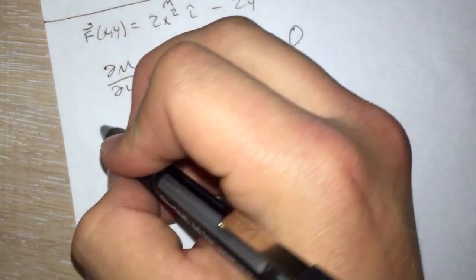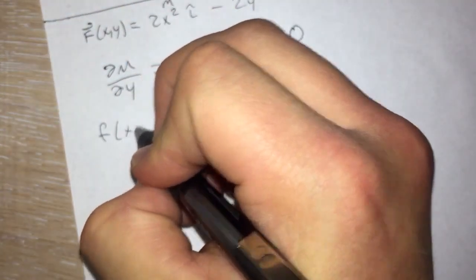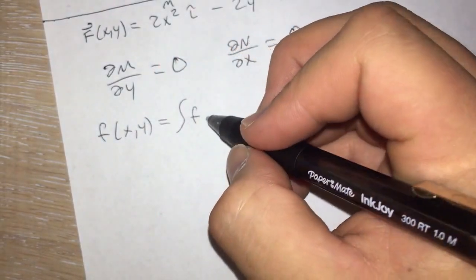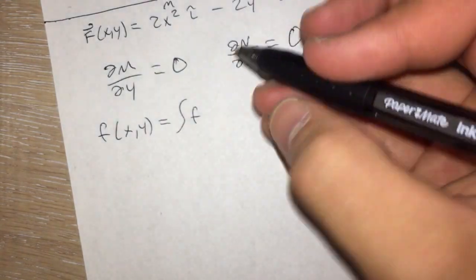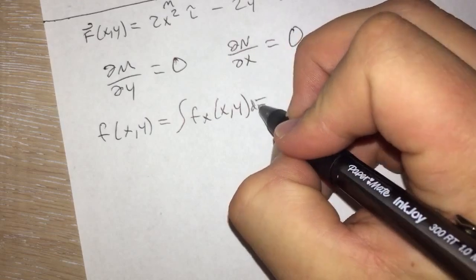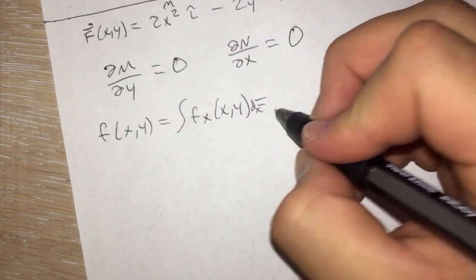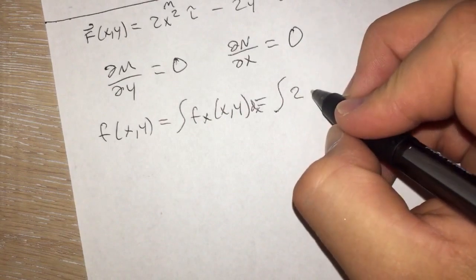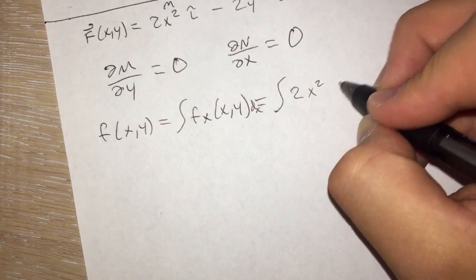And we are going to find the integral of f of x of xy and f of y of xy. So we'll start off with fx and put dx there, which is equal to the integral of this portion, which is 2x² dx.